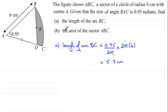Now for part B, we've got to work out the area of the sector ABC. And again, the area of the sector is going to be a fraction of the area of a circle. We'll just say area of sector ABC equals...